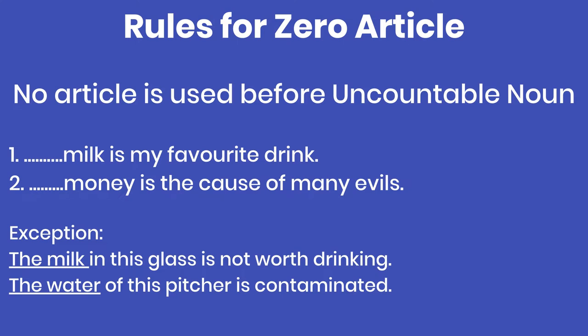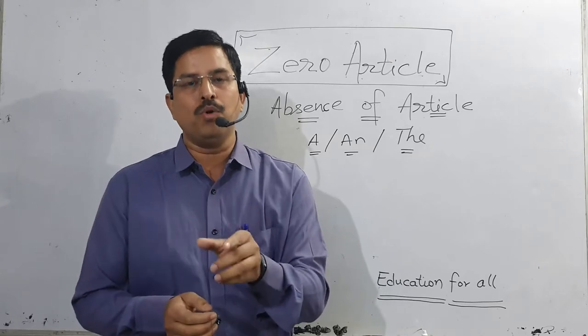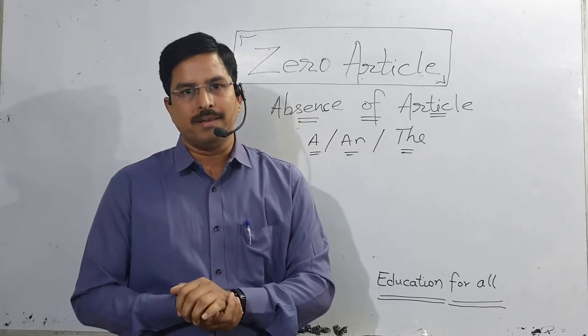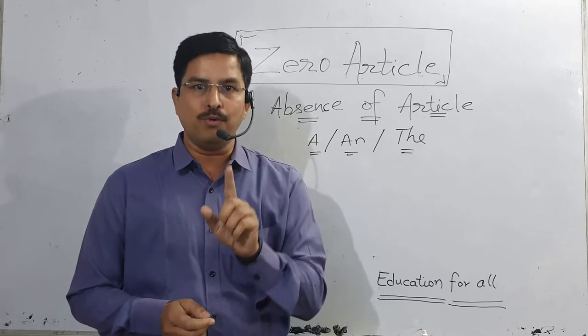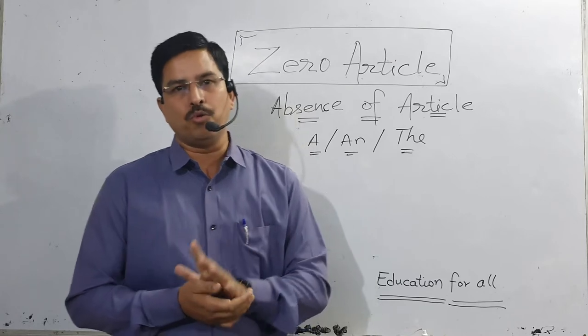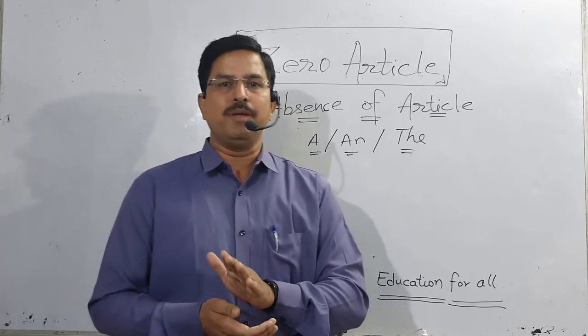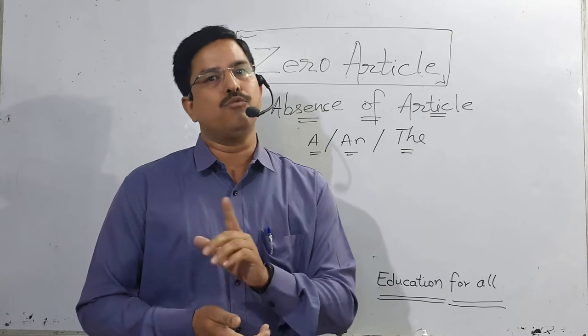For example, 'The milk in this glass is not worth drinking.' Here I am talking about a particular milk. Similarly, 'The water of this pitcher is contaminated' — I am talking about a specific water. So if the uncountable noun becomes definite through a reference, 'the' is used before it. Otherwise, there will be no use of article before an uncountable noun.